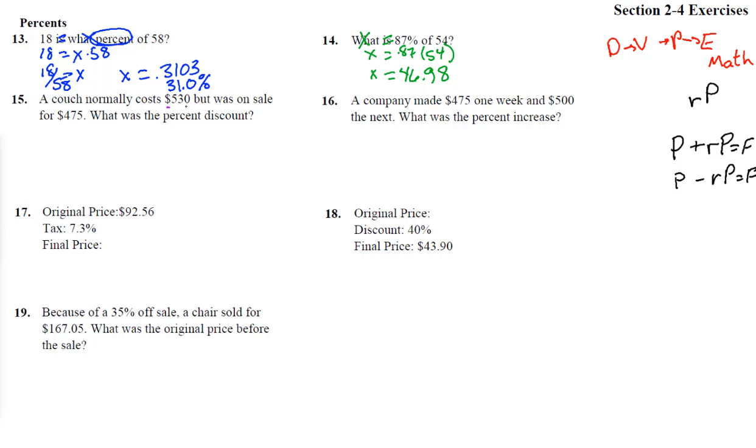A couch normally cost $530, but was on sale for $575. What was the percent discount? We've got to find out what was the actual discount first, so subtract these two to see how much money was saved. That is $530, and it's $55. So we would take the, we don't know the R, so rate times the percent, or sorry, the interest rate times the original price is $55, and this is the 530. And this is just like a quiz score, 55 out of 530 is how much? Now notice we don't take the 475 over the 530. That will tell us what percent we paid. We need to know what percent was the discount.